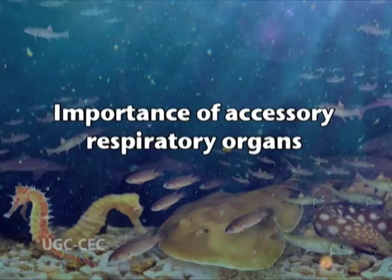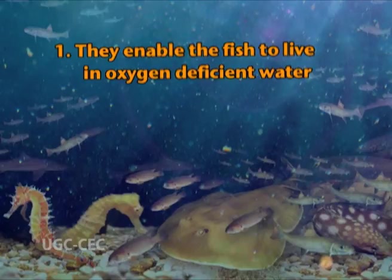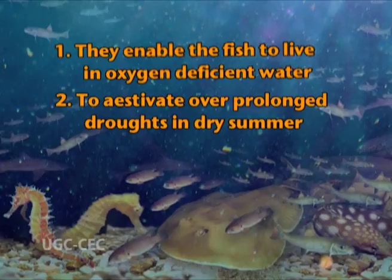Accessory respiratory organs of fishes: adult fishes depend chiefly on pharyngeal gills for aquatic respiration; however, other devices also occur to supplement or replace gill respiration. All such additional respiratory organs other than gills are known as accessory respiratory organs. These organs are found mostly in fishes of tropical fresh water, marshes, and hill streams. Accessory respiratory organs develop as an adaptation to particular environmental conditions.